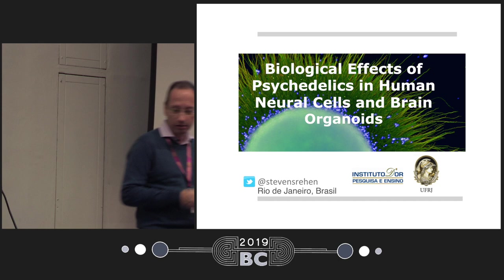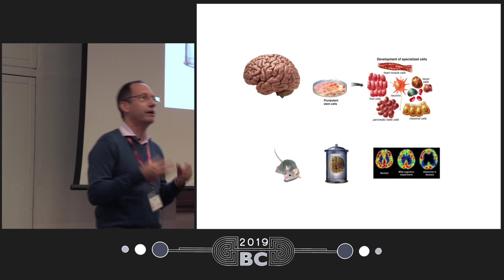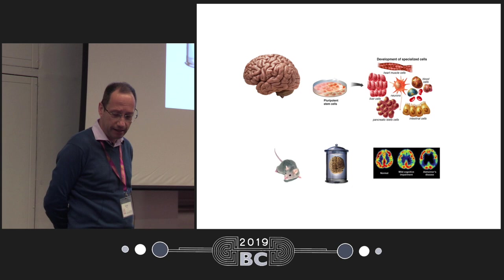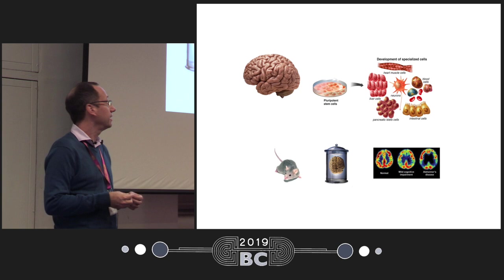There are several ways that you can work with the brain. You can use EEG, as we saw in our previous presentations. You can work with neural imaging — a non-invasive kind of approach to explore the brain. But we can also work with post-mortem brain tissue and with animal models.